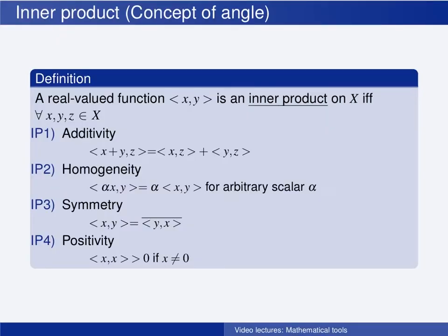We have defined the metric, giving the distance between two elements in a set, and the norm, giving the length of one element. Now we will define another topological structure, the inner product between two elements. And this gives us the concept of an angle.